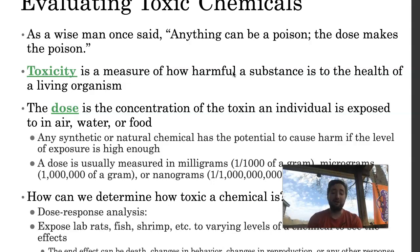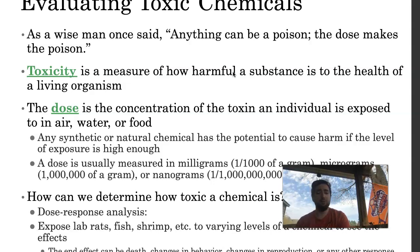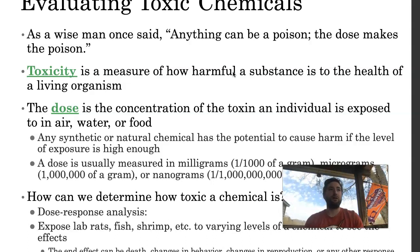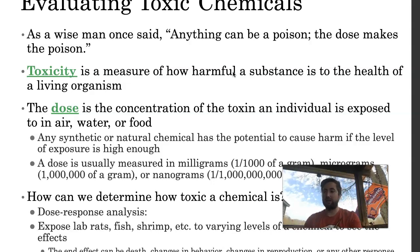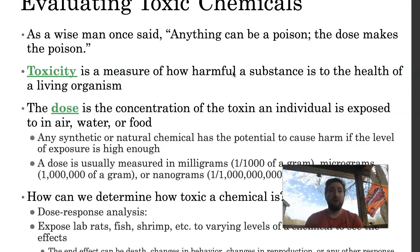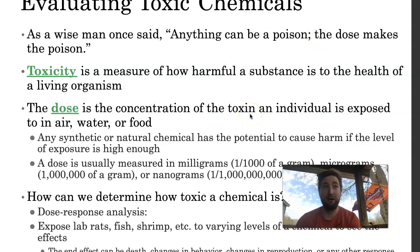So how do we determine how toxic a chemical is? What you're going to do is perform things called bioassay responses. You take a number of lab rats, fish, or shrimp, and you put them into a tank or terrarium. You have one group with zero concentration — not exposed to anything — then you have one milligram, five milligrams, ten milligrams, and you see what percentage of those die. The end effect could be death, changes in behavior, or really anything, but most of the time it is death.